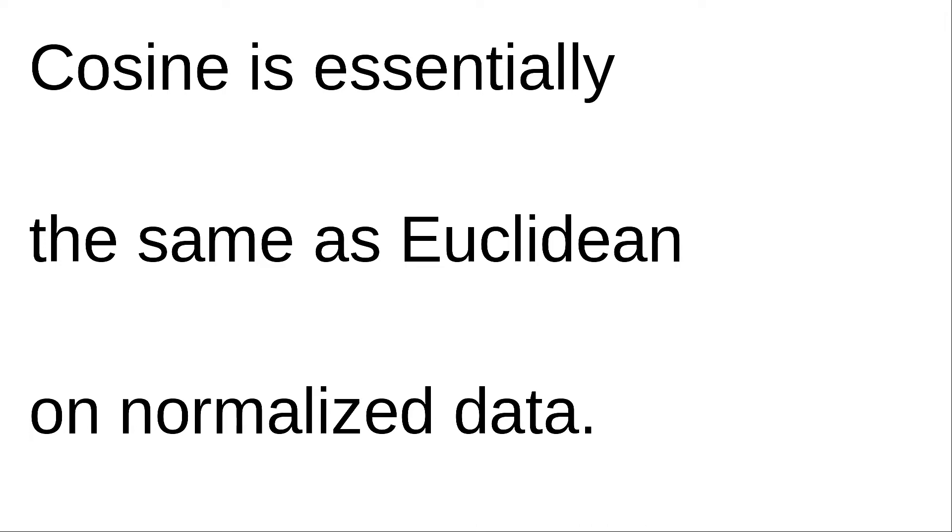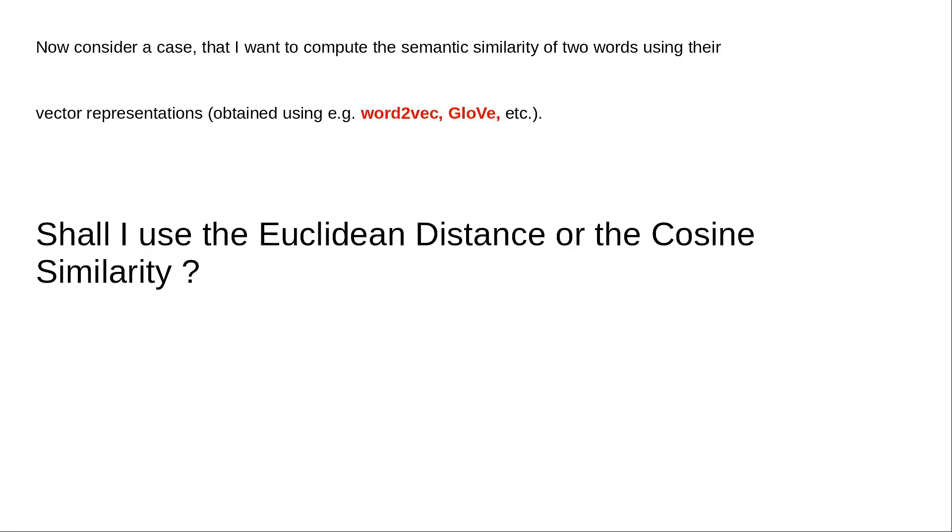Now consider the case that I want to compute the semantic similarity of two words using their vector representations obtained using, for example, word2vec or GloVe. The key question is: shall I use the Euclidean distance or the cosine similarity? I will present to you the logical case for both cosine and Euclidean. There are cases for both sides.